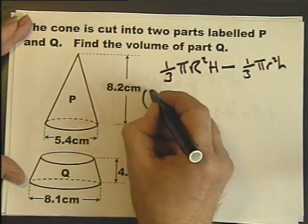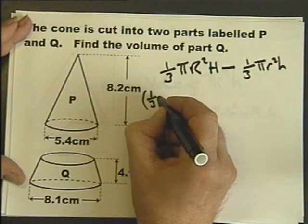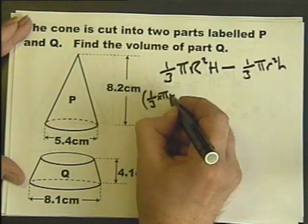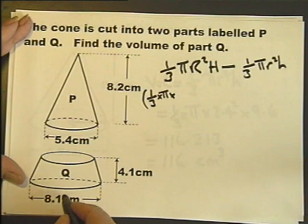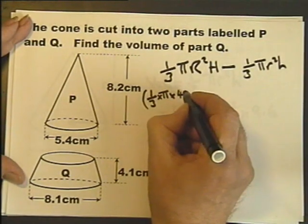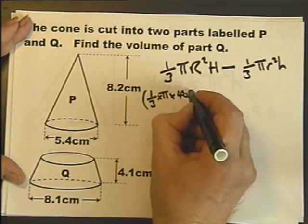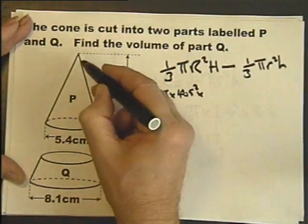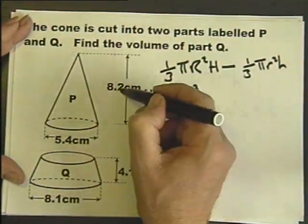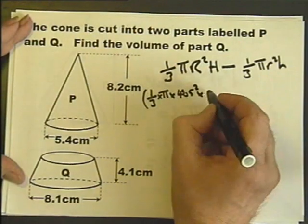So here we go, a third pi r squared, which is going to be half of that, which is 4.05 squared, multiplied by the height of the whole thing, which is those two added together, which is 12.3,